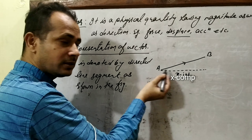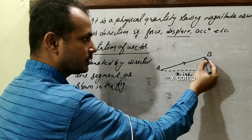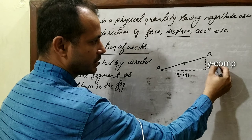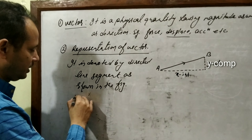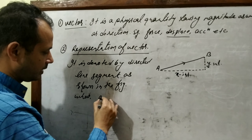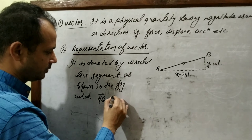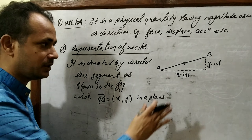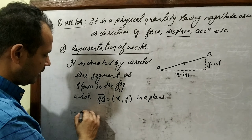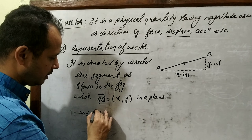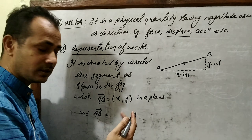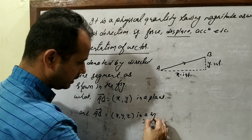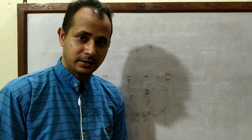Similarly, from initial toward final, if we draw a vertical line, that will represent the y-component. So we can write vector AB equal to (x, y) in a plane — this is a plane vector. And if we draw in space, we write (x, y, z) — a space vector.